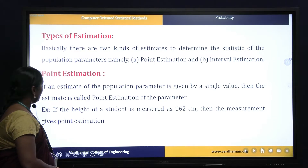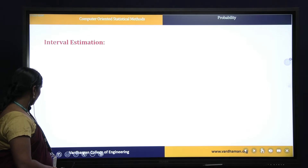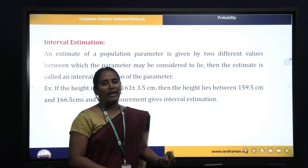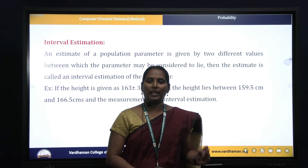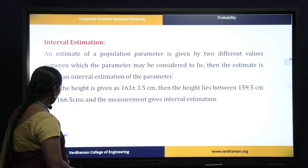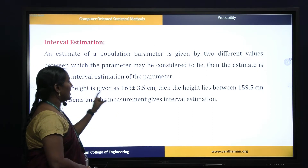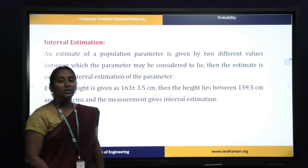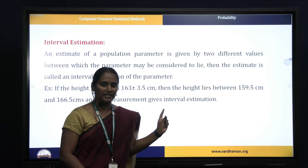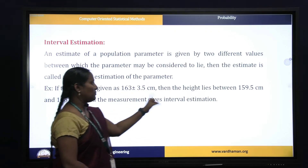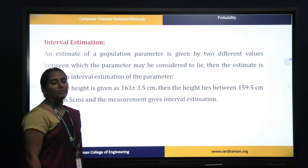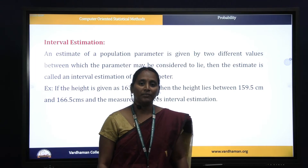Interval estimation means if an estimate of a population parameter is defined by two values. For example, if the age lies between 30 to 40, or the height is given as 163 plus or minus 3.5 centimeters — adding 3.5 and subtracting 3.5 — we get two values: 159.5 centimeters and 166.5 centimeters. This measurement is called an interval estimation.